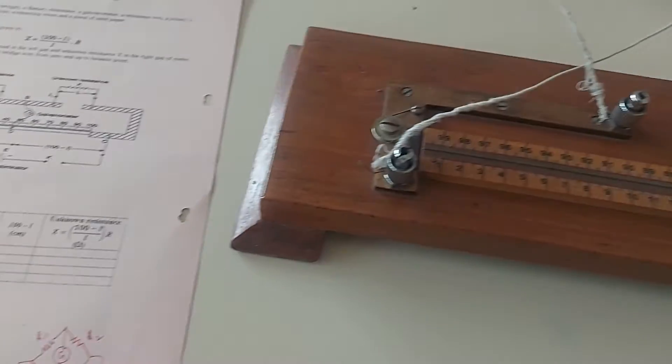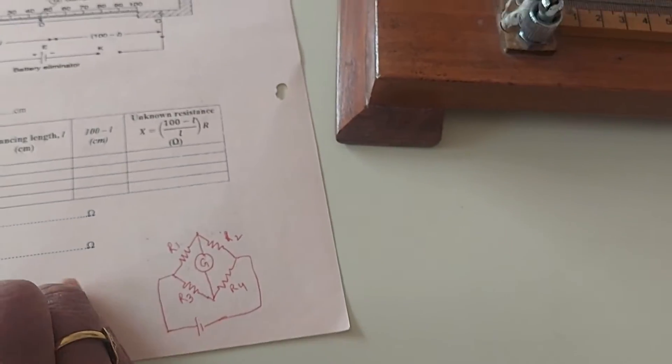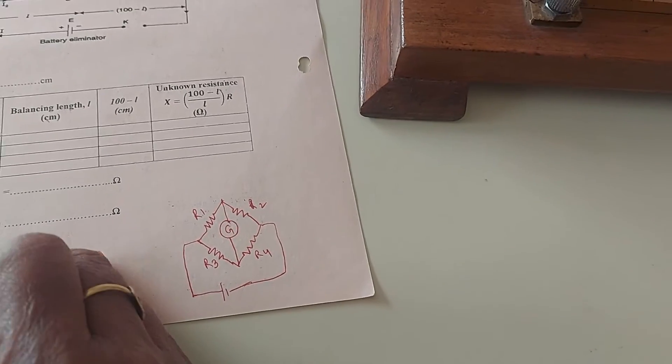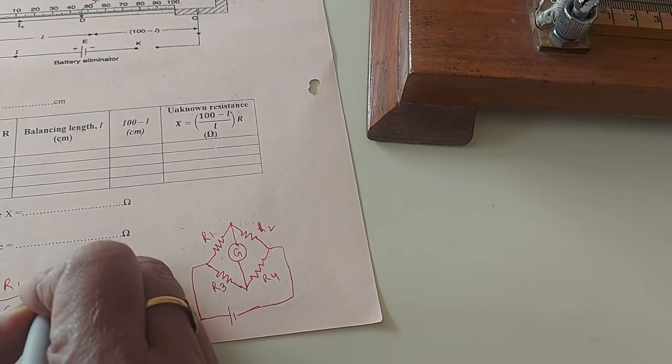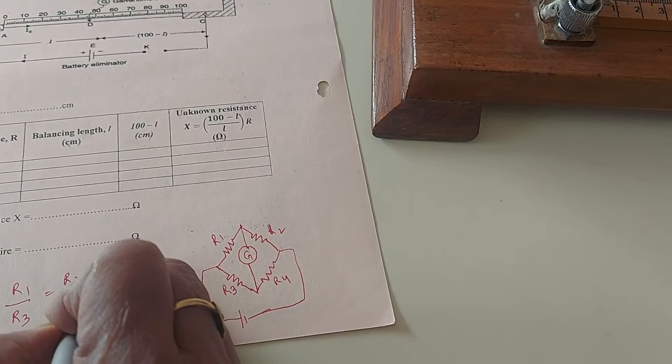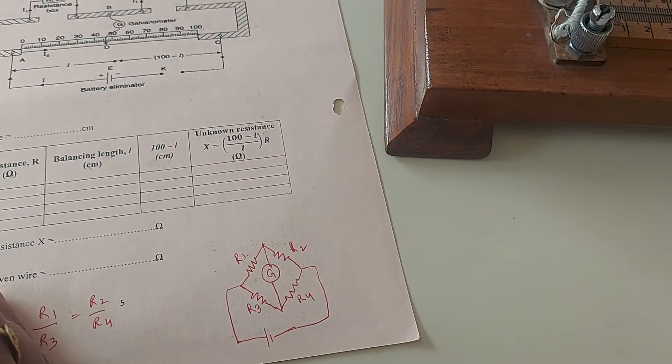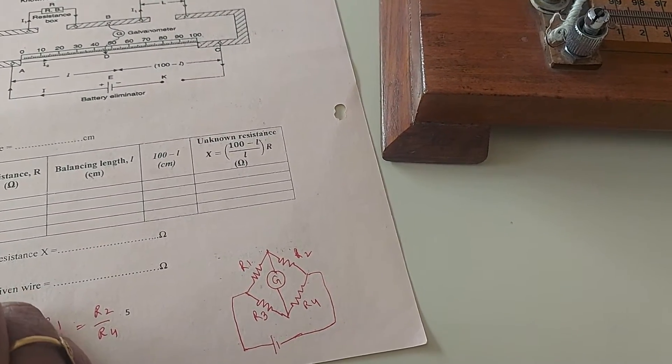The principle of Wheatstone bridge to find the unknown resistance, for example R2 in this case, is R1 by R3 equals R2 by R4. So R2 equals R1 times R4 upon R3.